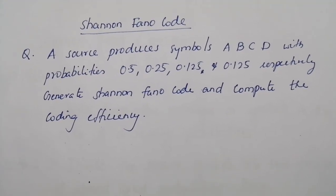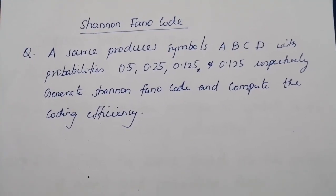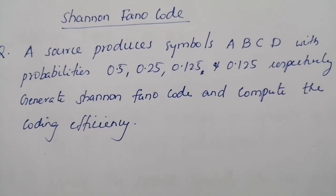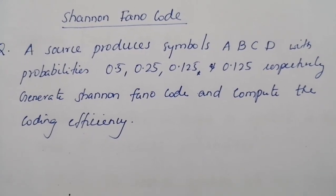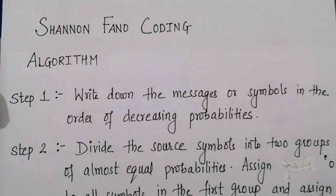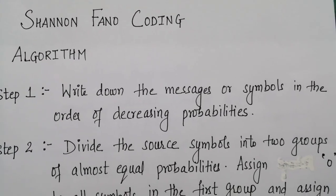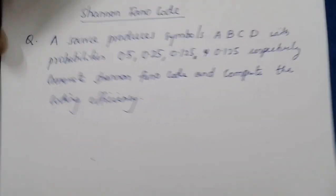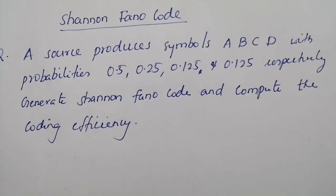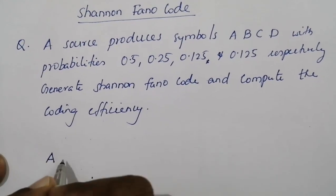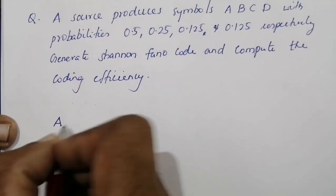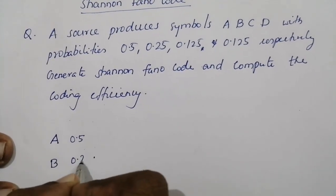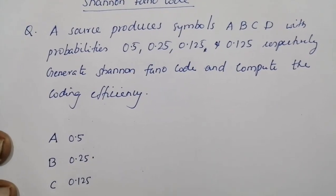We will now solve a problem for generating Shannon-Fano code. A source produces symbols A, B, C, D with probabilities 0.5, 0.25, 0.125, and 0.125 respectively. Generate the Shannon-Fano code and compute the coding efficiency. By the algorithm, the first step is to write down the messages or symbols in the order of decreasing probability. Since it is already given in decreasing order, we write A, B, C, D with probabilities 0.5, 0.25, 0.125, 0.125.